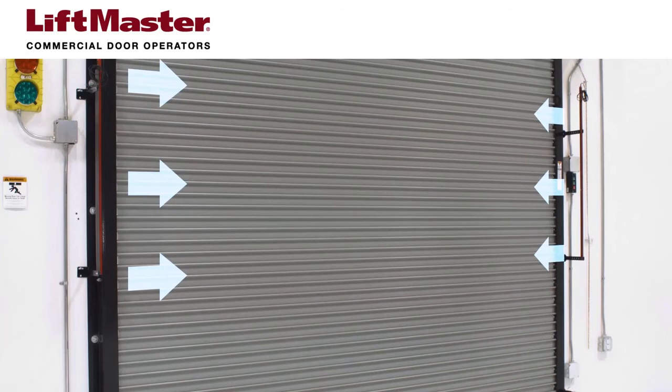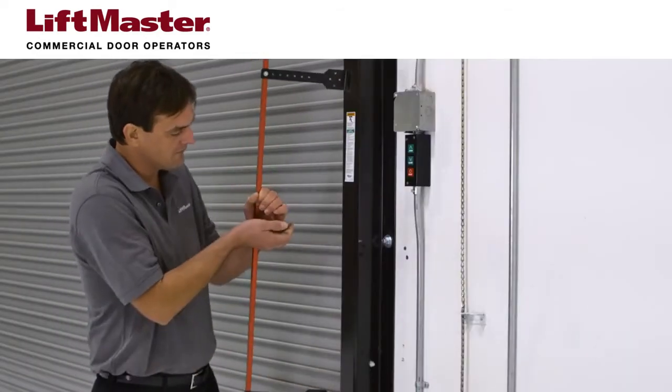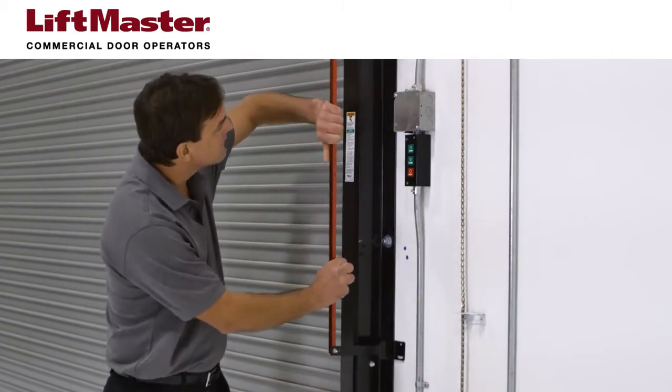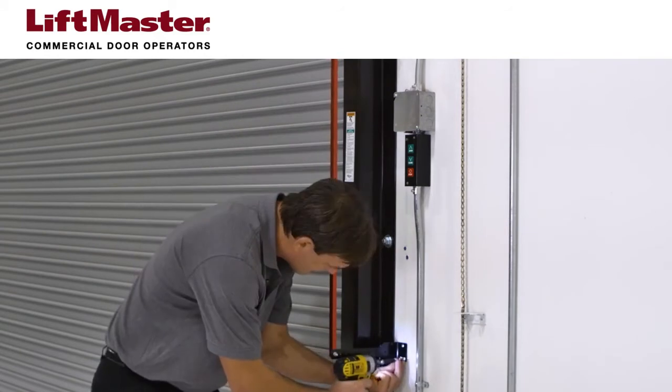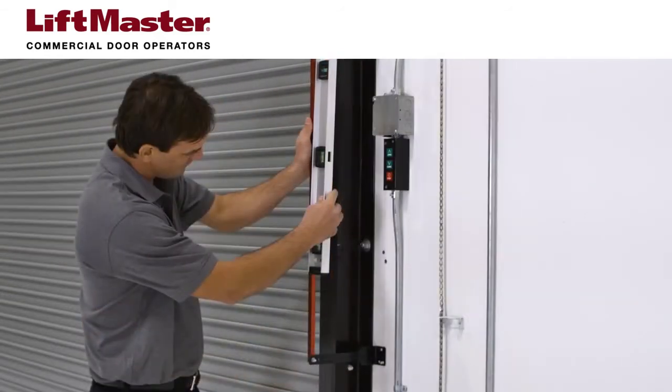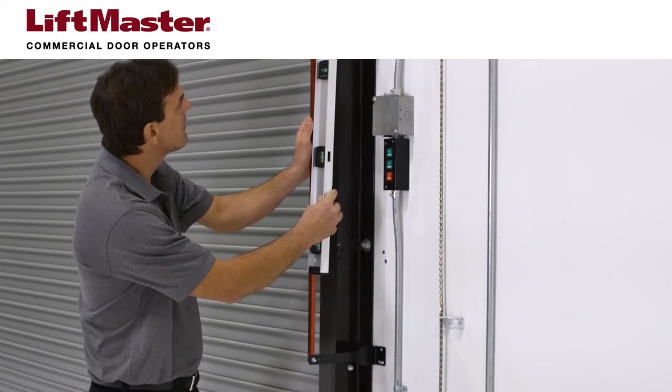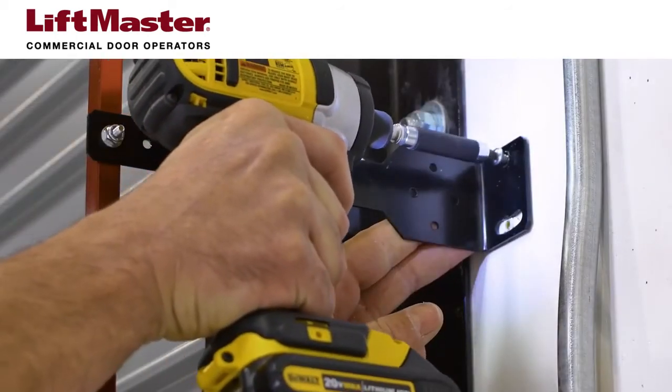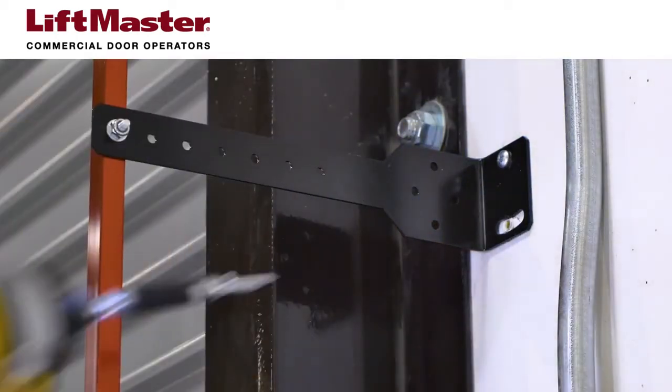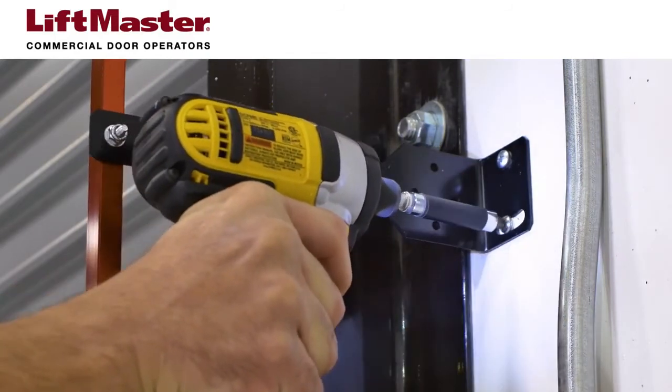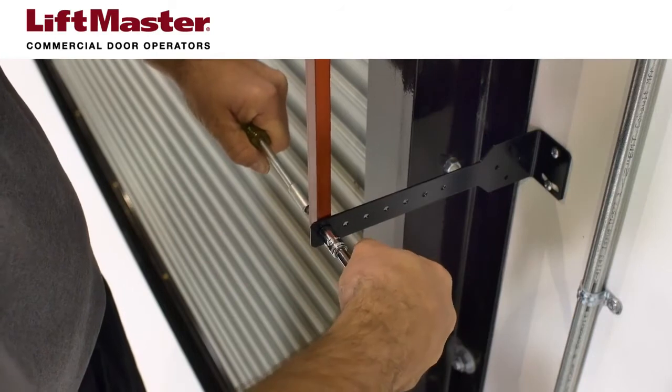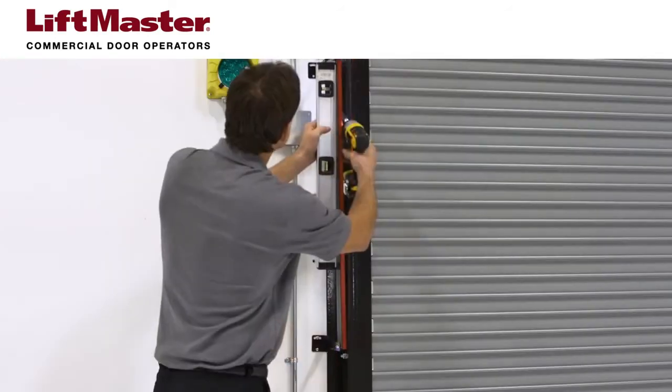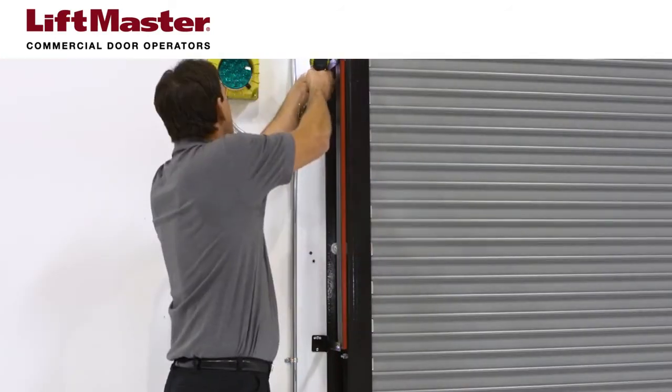Make sure the lights on the light curtain are facing each other when you mount them to the mounting surface. Hold the light curtain up to the desired mounting location with the cable end pointed upward. Secure the bottom mounting bracket to the mounting surface. Make sure the light curtain is level then secure the upper mounting bracket to the mounting surface. Tighten the screws to secure the light curtain to the mounting bracket. Secure the other light curtain to the opposite side of the door following the same steps.